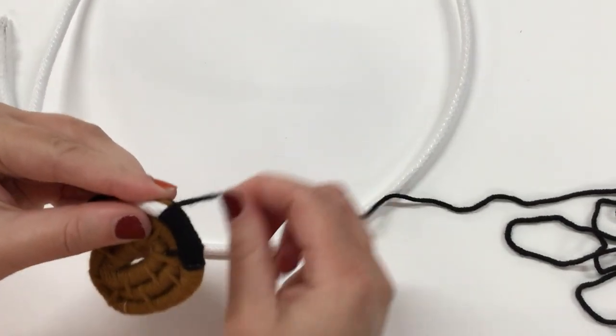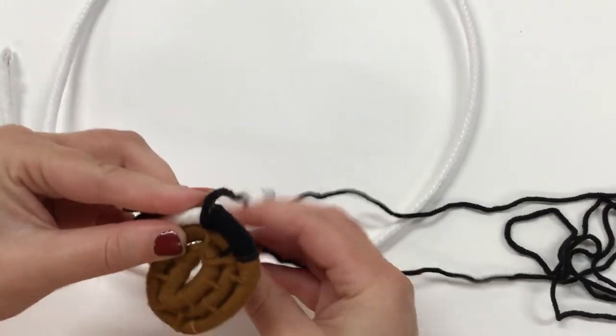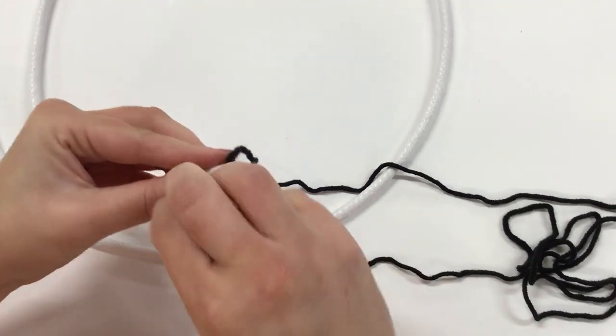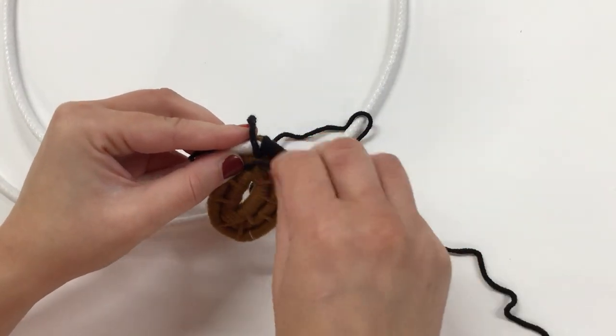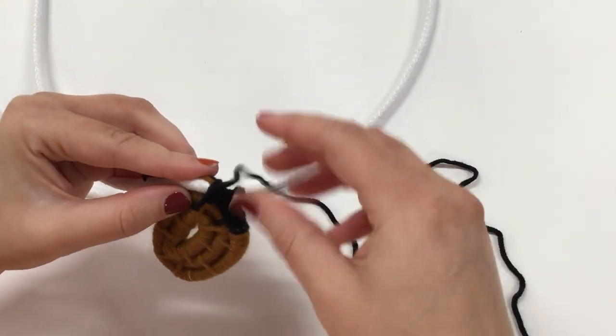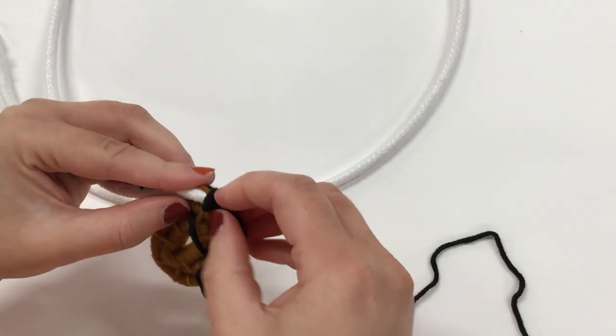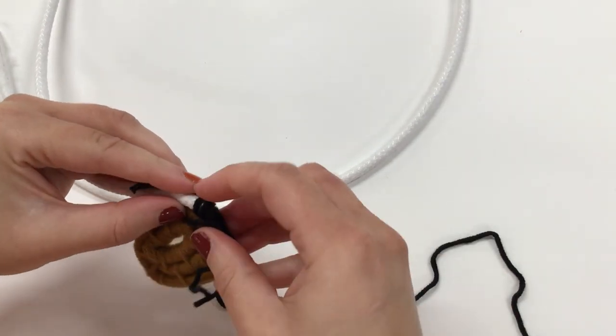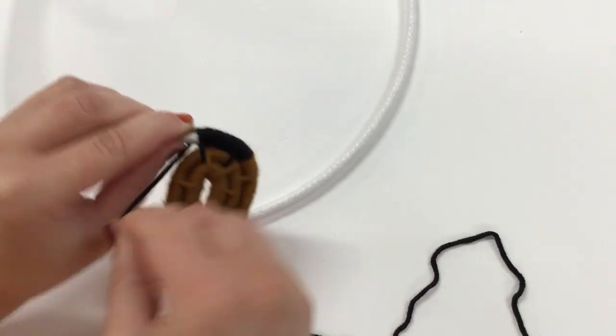I'm going to pull that close and tight, go up through the closest row, pull everything through, pull that nice and tight, and then again back on track with my eight coils.